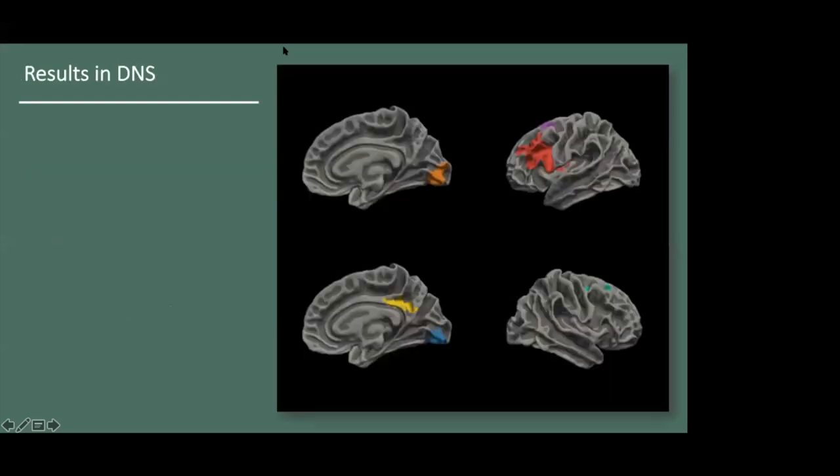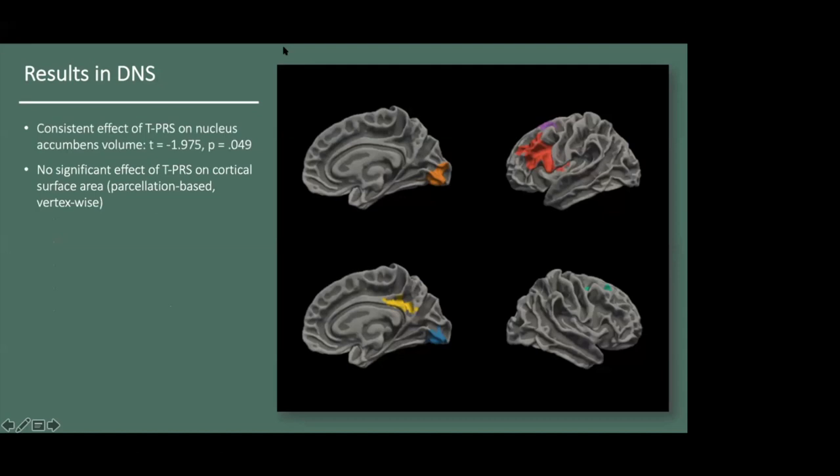As in the previous analysis, we detected a significant main effect of TPRS on nucleus accumbens volume, but this effect did not survive correction for multiple comparisons. Moreover, we did not replicate the previously observed effects of TPRS on cuneus or caudal middle frontal surface area, nor did we detect a significant main effect of TPRS on vertex-wise cortical surface area.